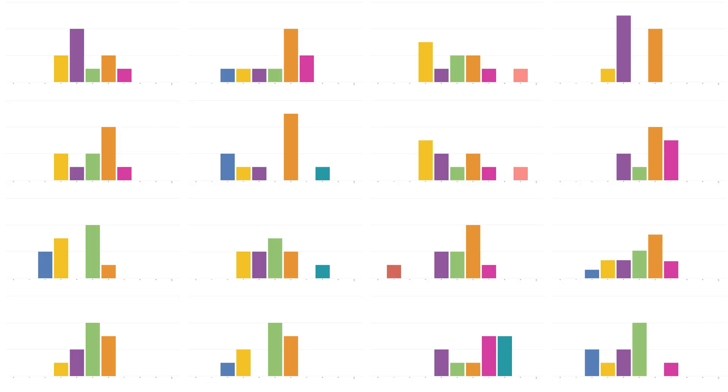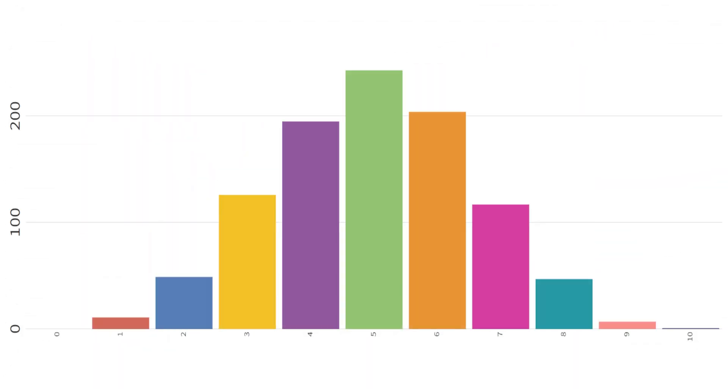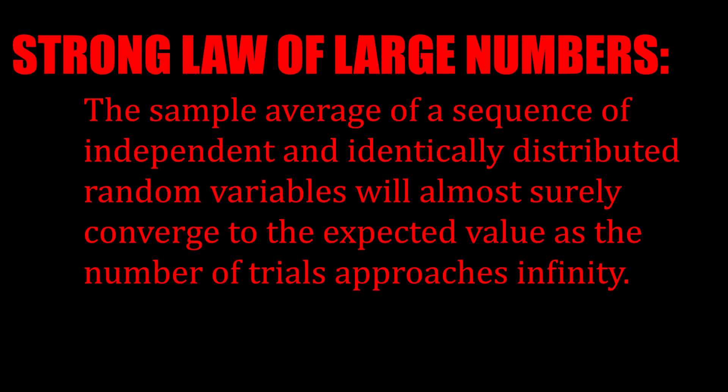What we should do is put every test that we've done so far together on the same graph. This is a hundred tests of ten flips each — now we're getting somewhere. There's a theorem in statistics that says the more you do something random, if that random thing has a probability, the more you do it, the closer it's going to get to that probability. Out of chaos comes predictability and order.